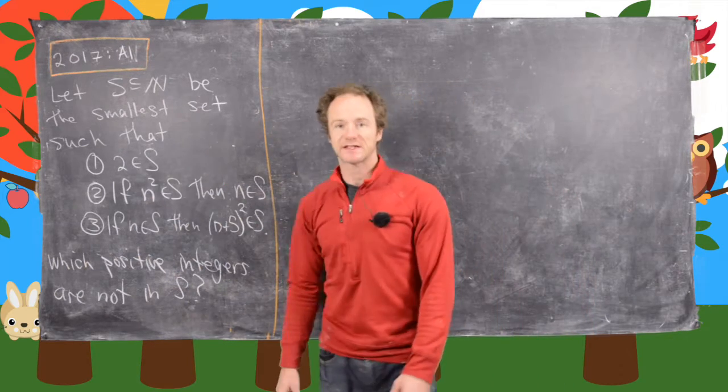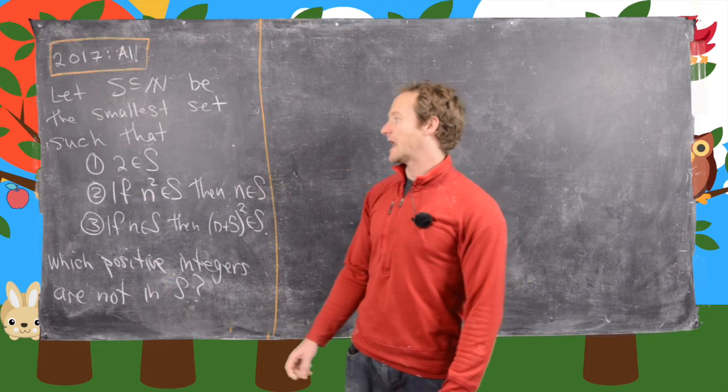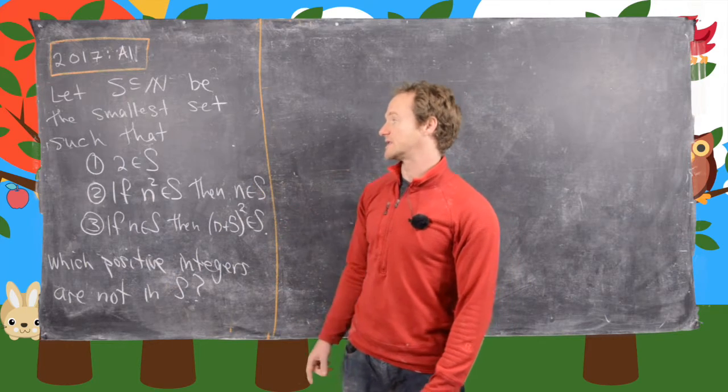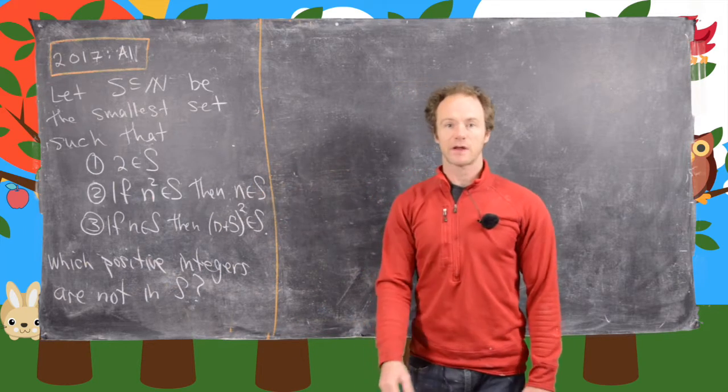So we want to let S be a subset of the natural numbers and it's the smallest set such that these three properties hold.